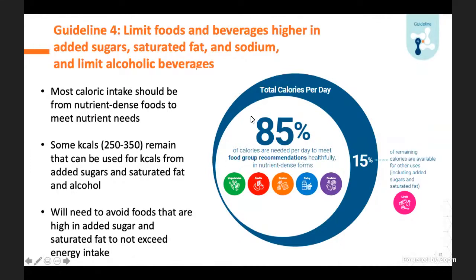The fourth guideline is to limit foods and beverages high in sugar, saturated fats, sodium, and alcoholic beverages. When the numbers were run at each calorie level, about 85% of the calories we eat each day need to come from healthy nutrient-dense foods, and there's about another 15% that can be used for added sugars, saturated fat, and potentially alcohol—really only about 250 to 300 calories for most people.